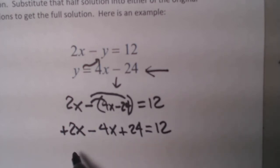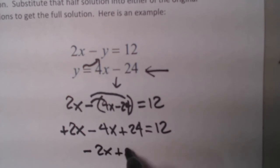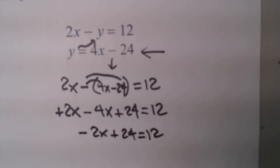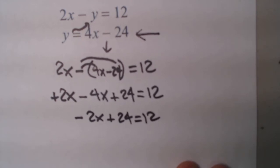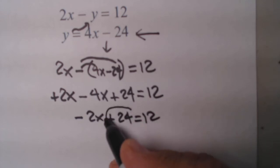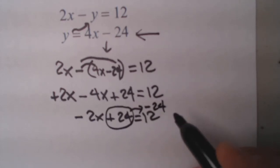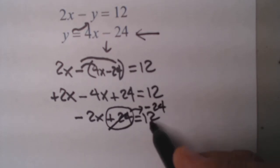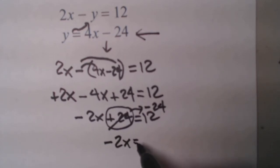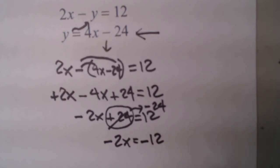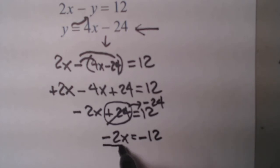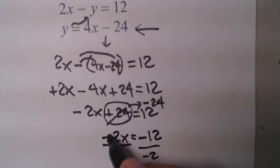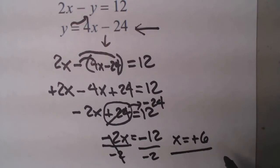Let's clean up a little bit. On the left side I've got 2x minus 4x, which gives me negative 2x. Then plus 24 equals 12. Once each side is cleaned up, we want x on the left and the plain number on the right. So the plus 24 goes over as negative 24. What I have left on the left is negative 2x, and on the right it's 12 minus 24 — negative wins by 12, so negative 12. Now divide both sides by negative 2. The two minuses give me a plus, and 12 divided by 2 is 6. So x equals 6 — there's half the solution.